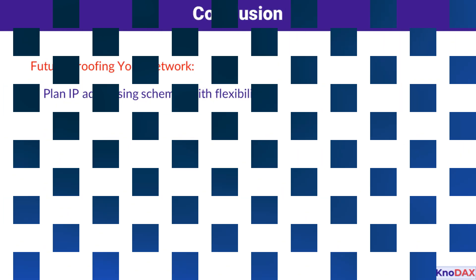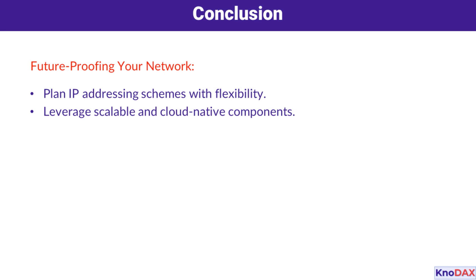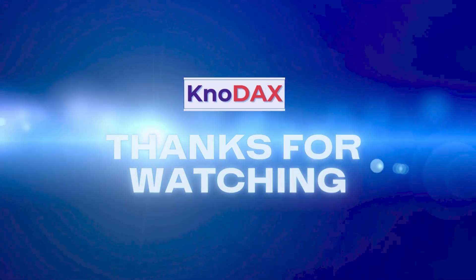In conclusion, determining scalable network configurations is about proactive planning and smart use of tools. By designing IP addressing schemes with growth in mind, leveraging scalable components like load balancers and auto-scaling, and ensuring redundancy, you can future-proof your network infrastructure. This way, you're always ready for what's next.